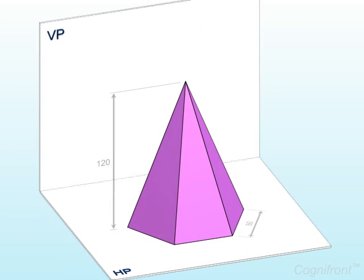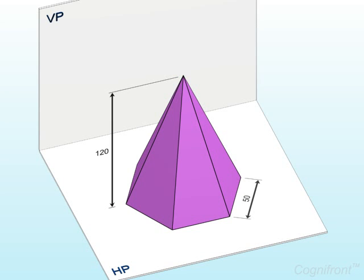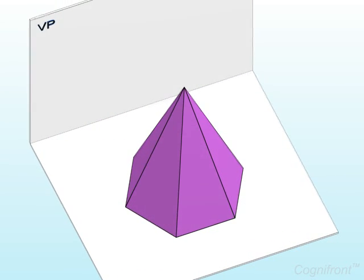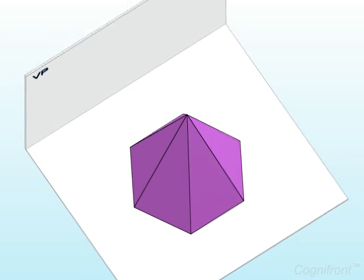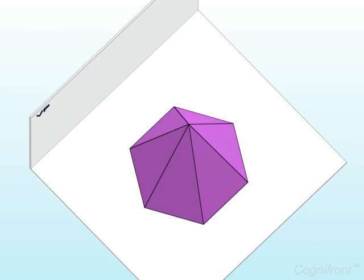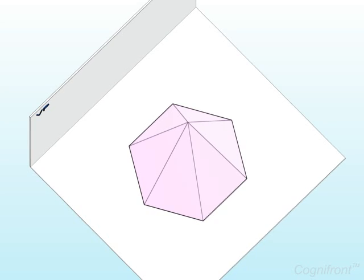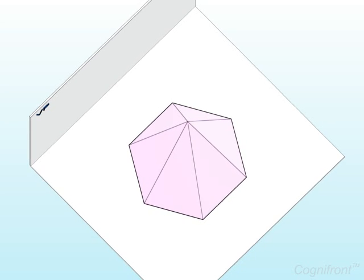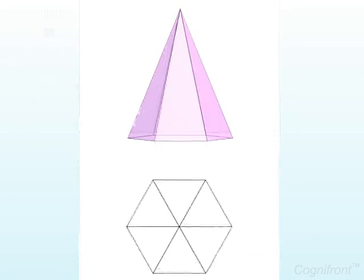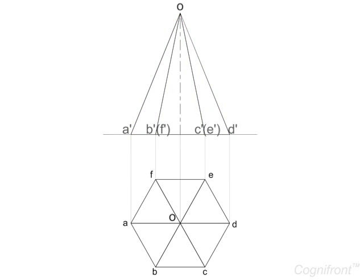Now let's discuss how to draw isometric views of solids. A hexagonal pyramid is resting on HP with a base side parallel to VP. Its orthogonal plan view shows true shape of the hexagonal base. So let's construct its isometric view.